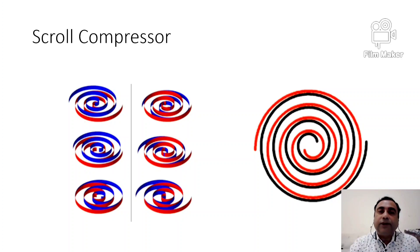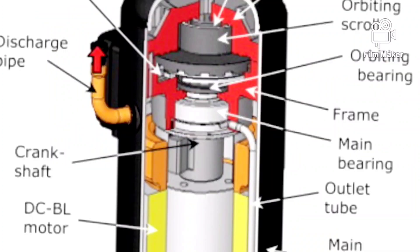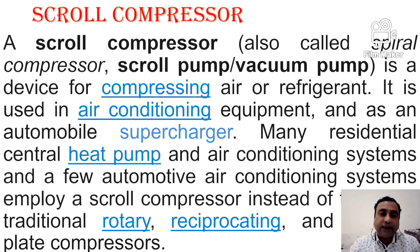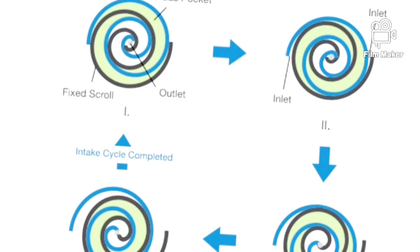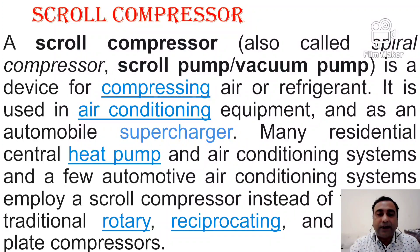The next term is scroll compressor, also called a spiral compressor. It is a device for compressing air or refrigerant, used in air conditioning equipment and as an automobile supercharger. Many residential central heat pump and air conditioning systems, and some automotive air conditioning systems, employ a scroll compressor instead of the more traditional rotary, reciprocating and oval plate compressors.